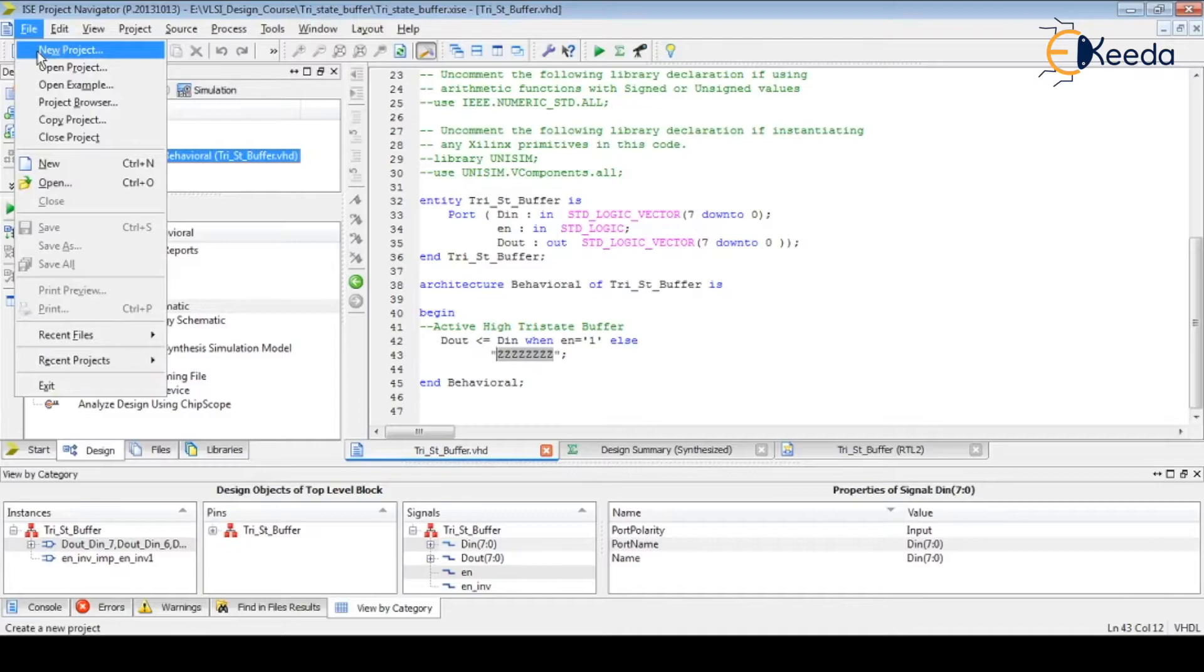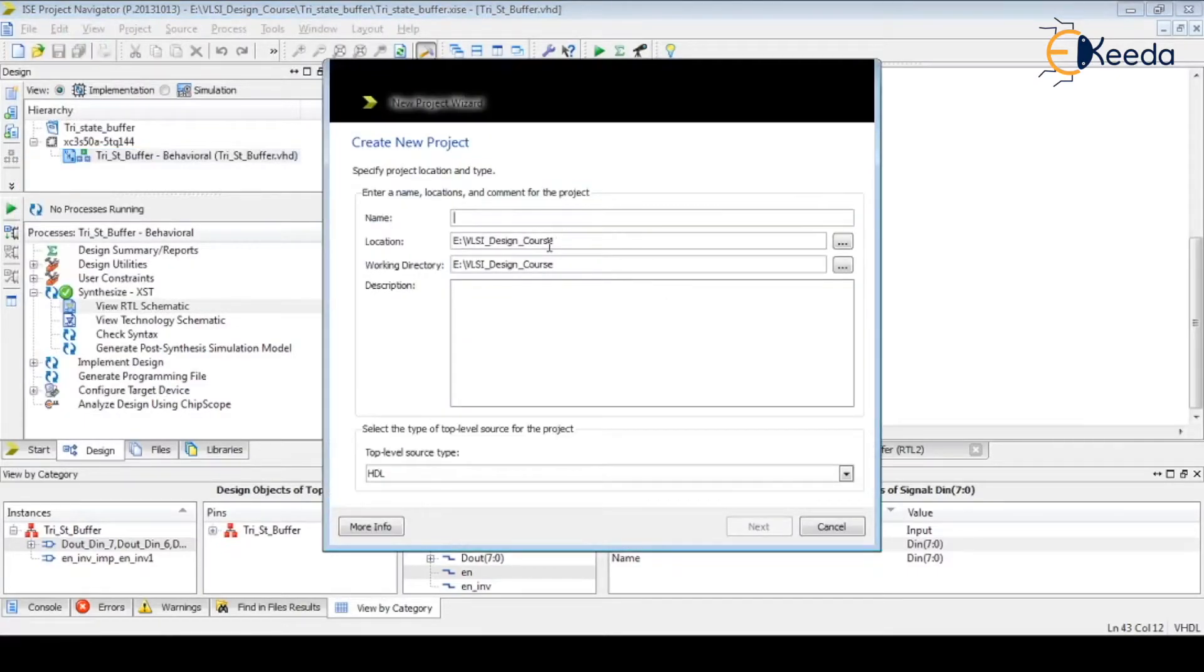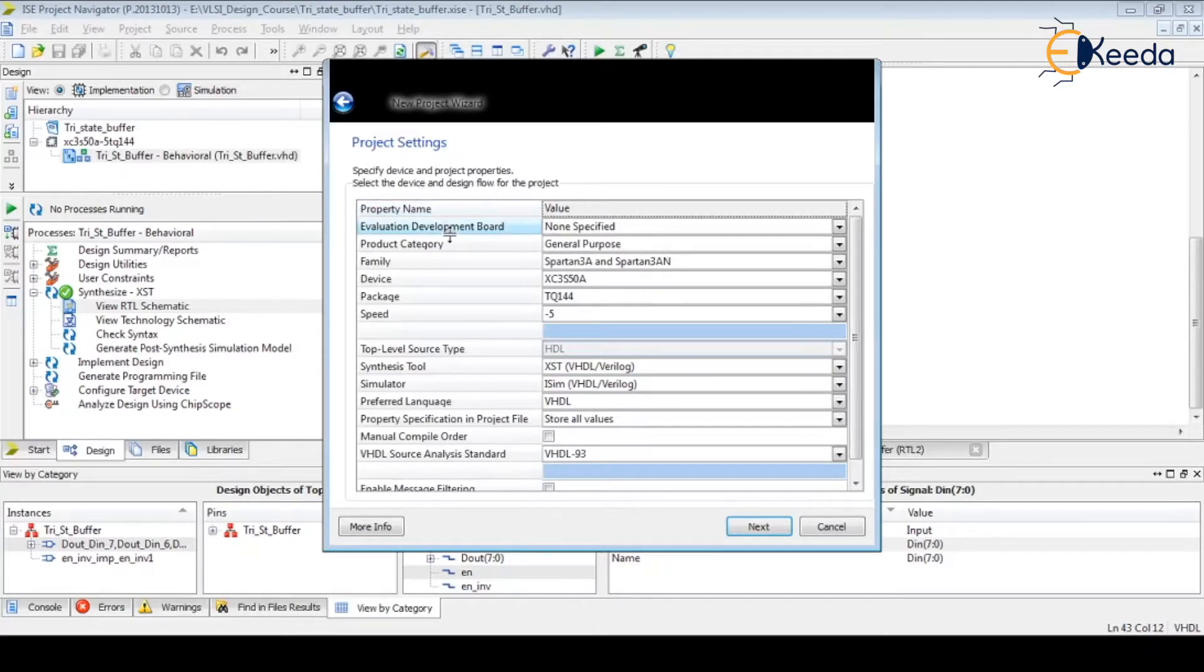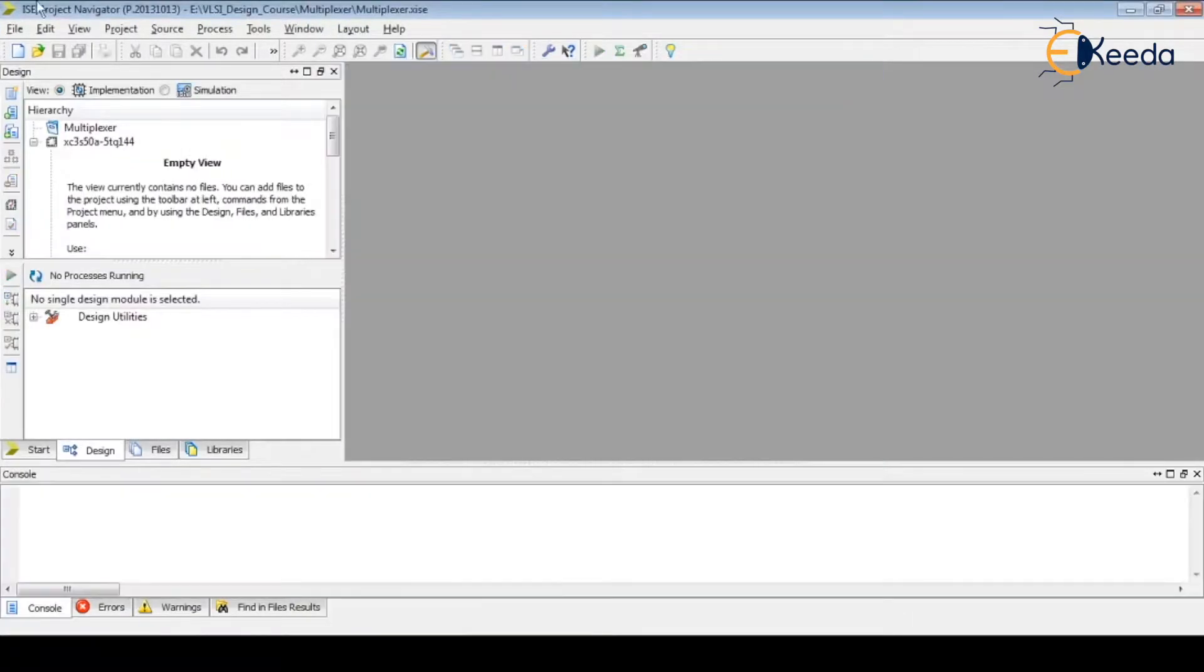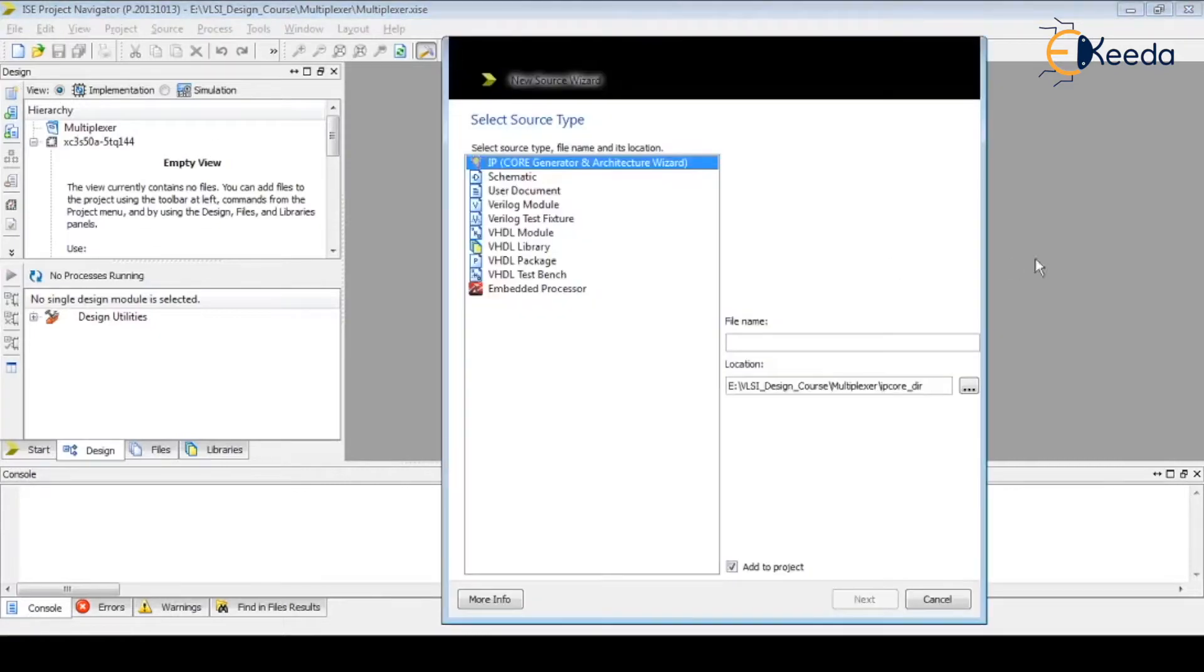So let's start File, New Project. I am giving project name as multiplexer. These parameters are always same because we are using the same development board: Xilinx Spartan3A family, XC3S50A product device name, then its package TQ144, other parameters are same. So let's create a project.